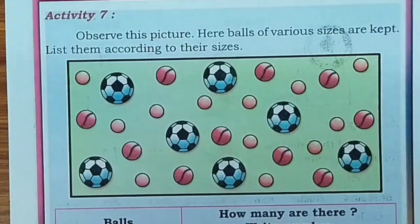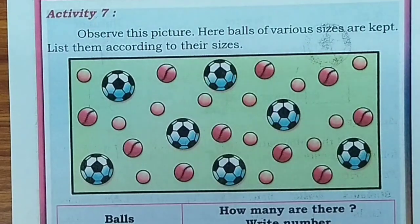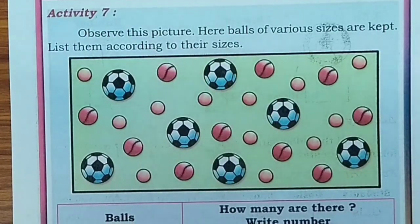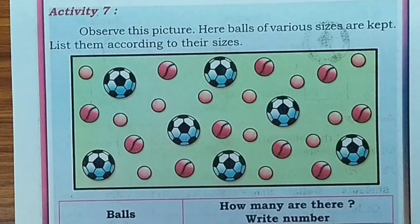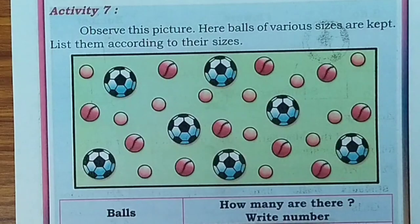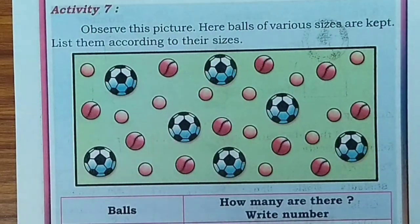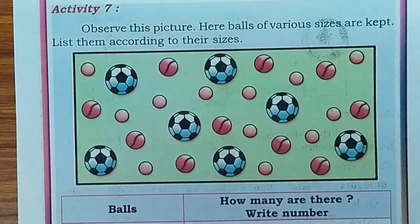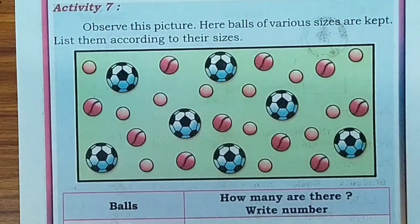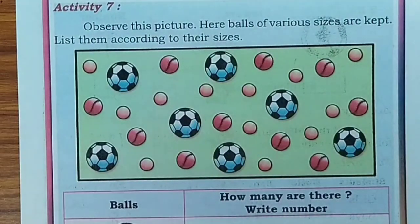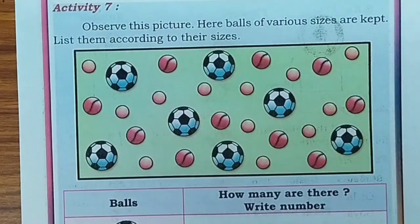Activity 7. Here we can see various sizes of balls. Now we have to do Activity 7 using this picture. Observe the picture — balls of various sizes are kept. List them according to their sizes: small, medium, and big. So we will write the number of big balls first.